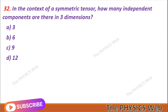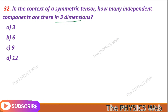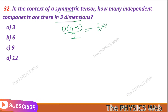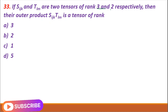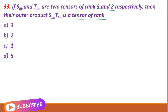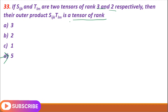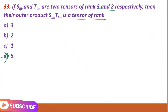Question 32: In a symmetric tensor in three dimensions, the number of independent components is n(n+1)/2 = 3×4/2 = 6 — so B is your correct option. Question 33: If S_ijk and T_lm are tensors of rank 3 and 2 respectively, their outer product S_ijk T_lm is a tensor of rank 5 — so D is your correct option. Remember, for the outer product the resultant tensor has rank equal to the sum of the individual tensor ranks.